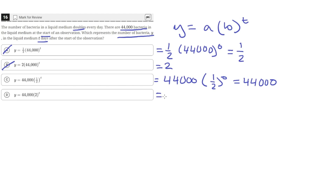For answer choice D, we also get 44,000, because two raised to the zero is just one, and 44,000 times one is 44,000. So we're left with answer choices C and D.